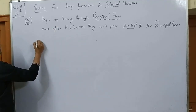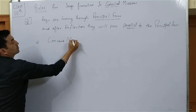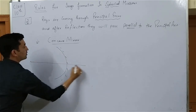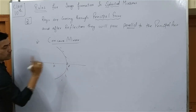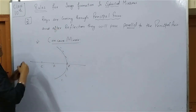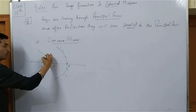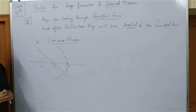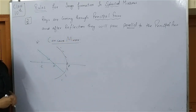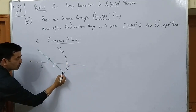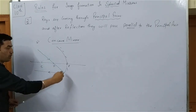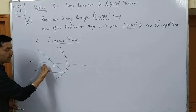For the concave mirror, you can see the pole, principal focus, and center of curvature. A ray is coming through the principal focus. You can easily predict the direction of the reflected ray — after reflection it will pass parallel to the principal axis. So the ray comes through the principal focus and goes parallel to the principal axis after reflection.